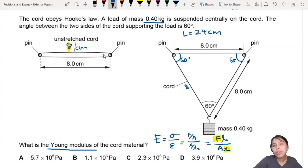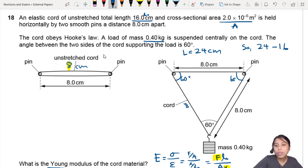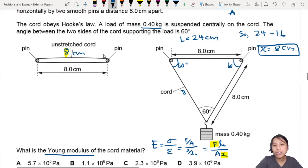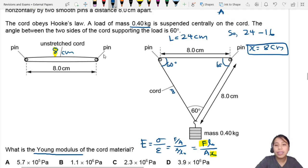This is a special kind of triangle: equilateral triangle, so 60-60-60. The total length has become 24, which means that the extension will be 24 minus 16, because 16 is the original length. So you have an extension of 8 cm. Done, we have found one piece of important information.